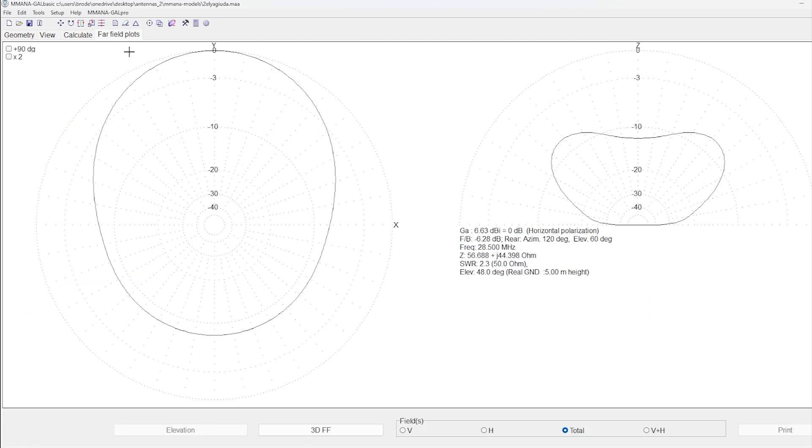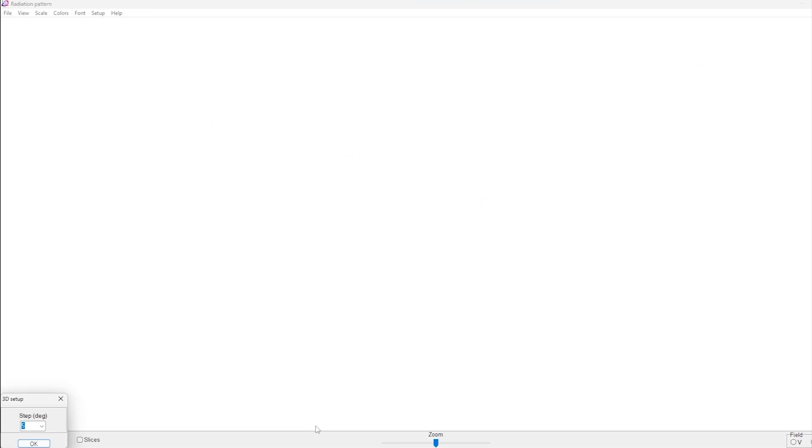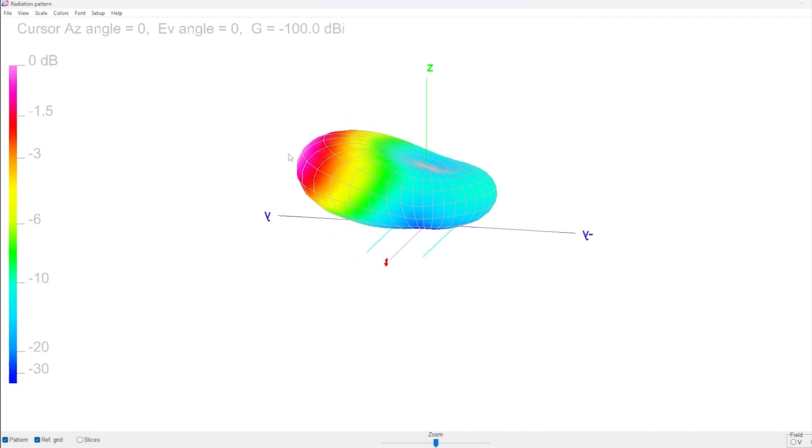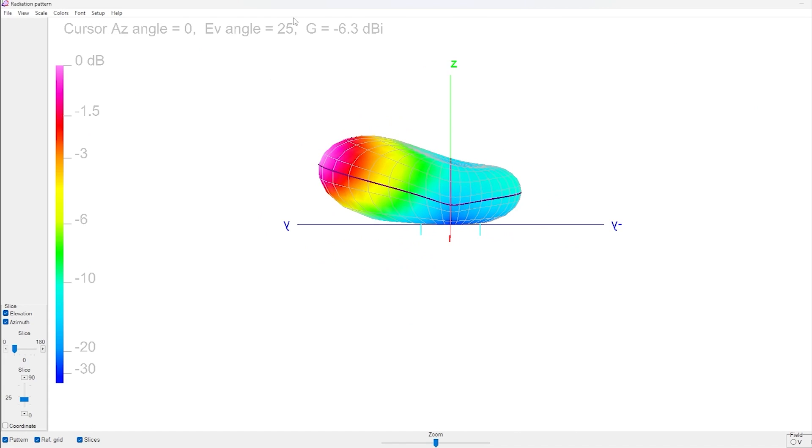So let's see what that far field plot looks like. We're going to hit start same conditions far field plot. You can already see we have a lot of gain in this direction. Let's look at the 3D far field and sure enough we have most of our RF going out. Yep 25 degrees.